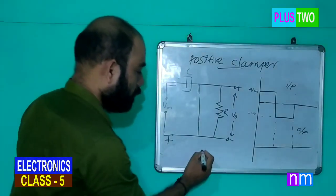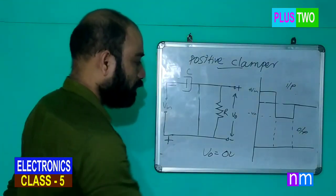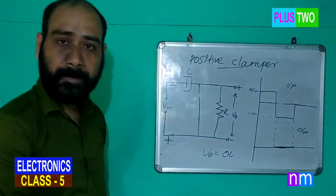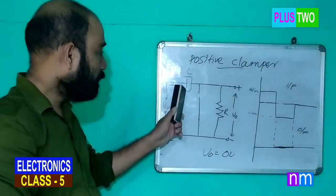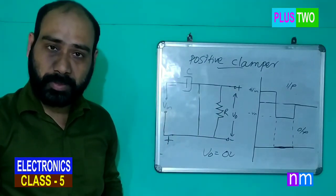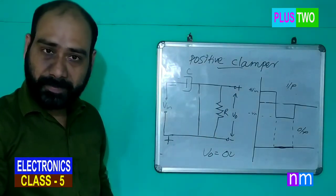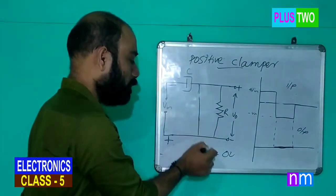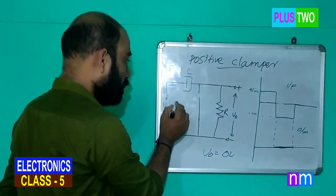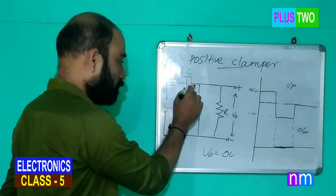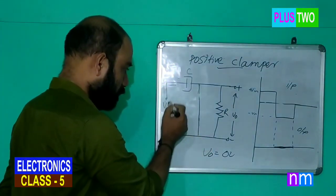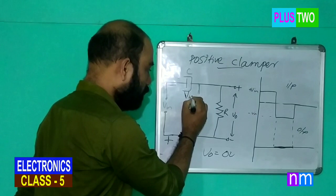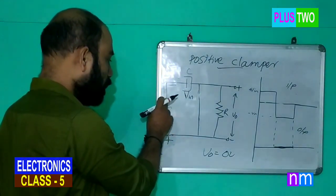The output V0 is 0V during the negative half-cycle. The RC time constant is very short because the resistor is shorted by the diode. During this half-cycle, the capacitor charges up to the input voltage Vin, storing that voltage.